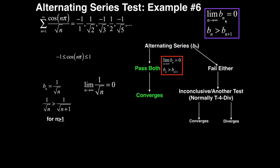The alternating series test tells us we need to take the limit as n goes to infinity of b sub n and see if it equals 0. The limit as n goes to infinity of 1 over square root of n is obviously 0, because this is just 1 over infinity, which is 0. So our first criterion is satisfied.